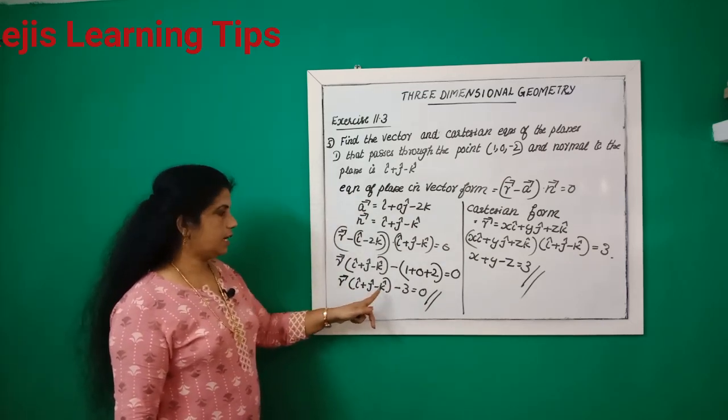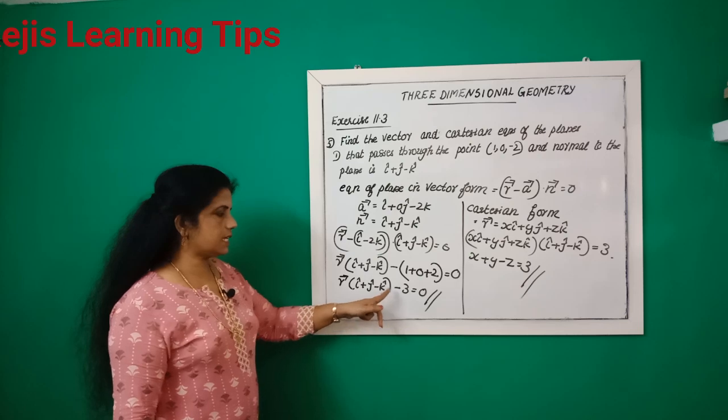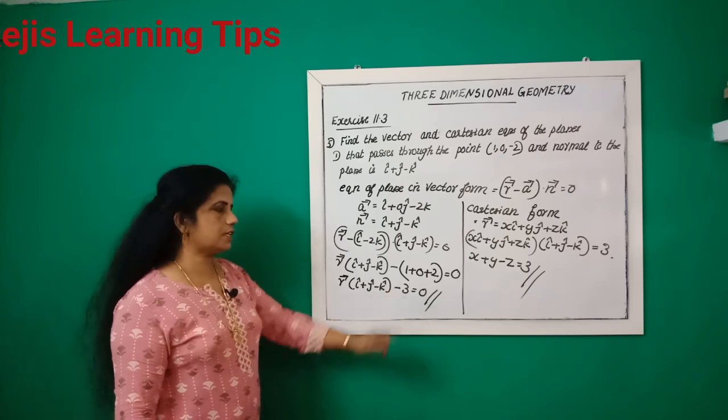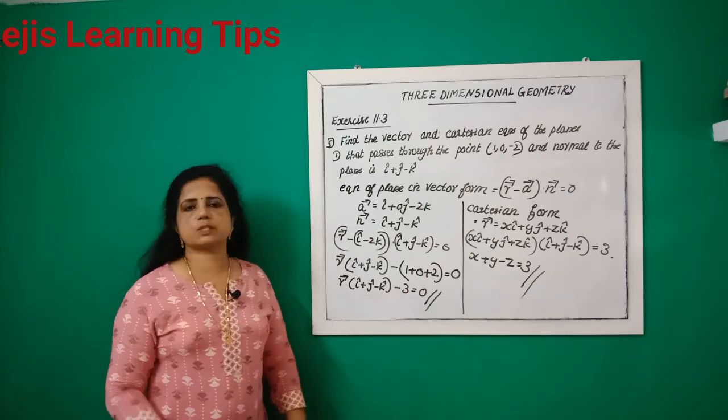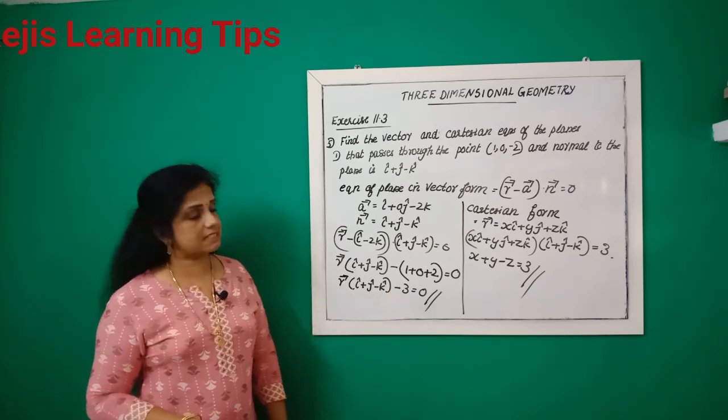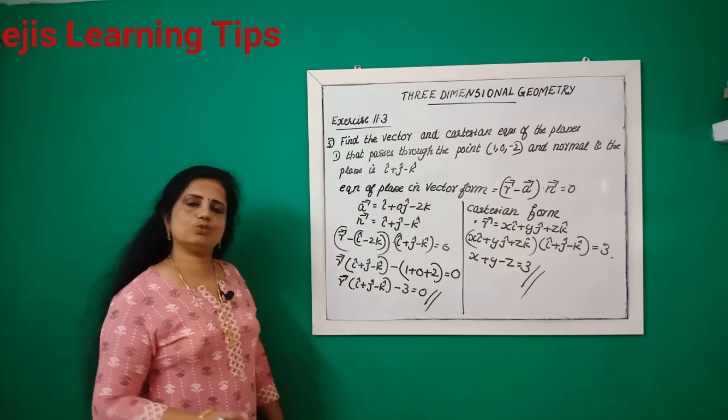So x plus y minus z minus 3 is equal to 0, which means x plus y minus z is equal to 3. This is the Cartesian equation of the plane for the first sub-problem.